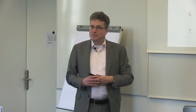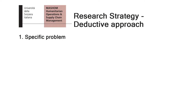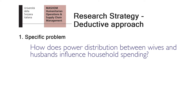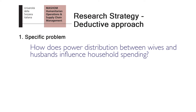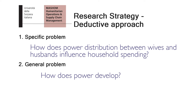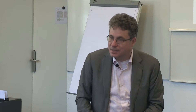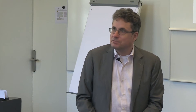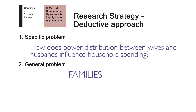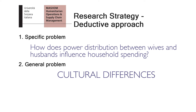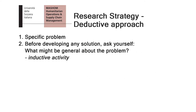For example, the first research idea mentioned was on the power distribution between wives and husbands, and how this influences the spending of household income. When you talk about power distribution, you might want to read general literature on power — how power develops, how leadership develops, how power is distributed among different entities of social communities. Then you might go more specific and read literature on family formation, discrimination, or cultural differences between countries.